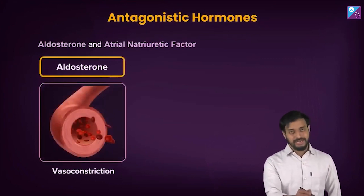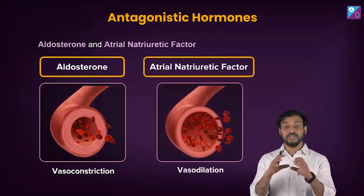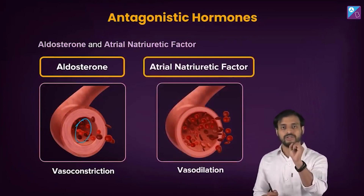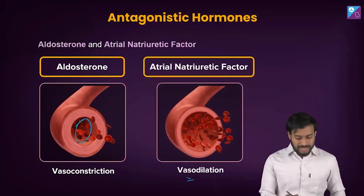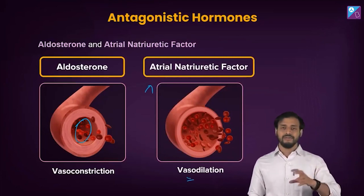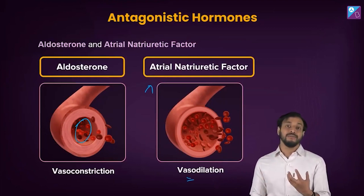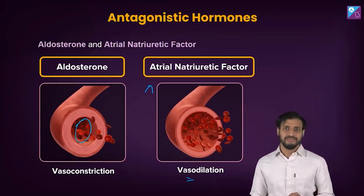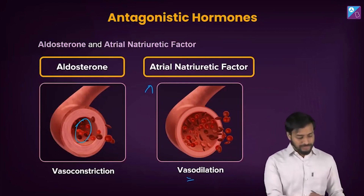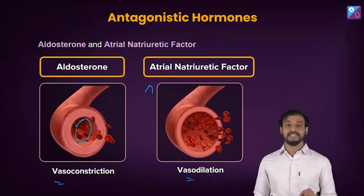First example: aldosterone and ANF — atrial natriuretic factor. Aldosterone helps in vasoconstriction, meaning the diameter of the blood vessels becomes smaller. Whereas ANF brings about vasodilation. Relate this to what you have studied in the excretion system and blood circulatory system. Aldosterone causes vasoconstriction; ANF acts as a vasodilator and increases the diameter of the blood vessels.